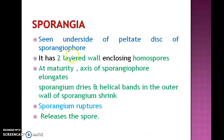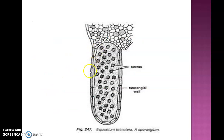The sporangium is usually seen at the underside of the peltate disc of the sporangiophore. It has a two-layered wall for protection, which encloses homospores. After maturity, the axis of the sporangiophore elongates and the sporangium wall shrinks, resulting in rupturing of the sporangium and release of spores. The sporangium has a two-layered wall enclosing numerous spore mother cells, which undergo reduction division, resulting in formation of spores of similar type — homospores.